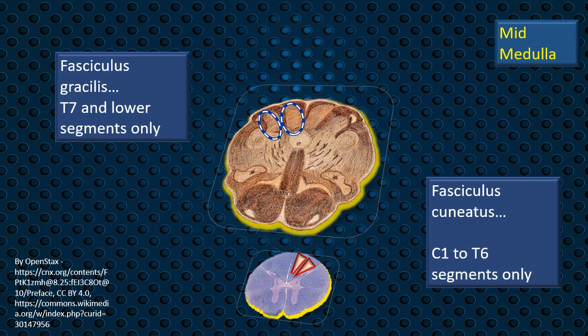The fasciculus gracilis is present in the lower part of the spinal column — that is, mid-thoracic and below, T7 and below. In principle, the more superficial fibers are the ones coming in at higher spinal segments. Therefore, the fasciculus cuneatus, which is the lateral fasciculus in the posterior column, is made up of C1 to T6 segments.